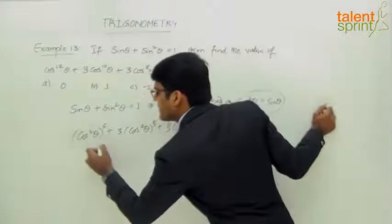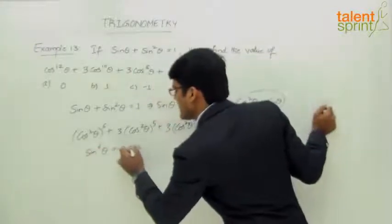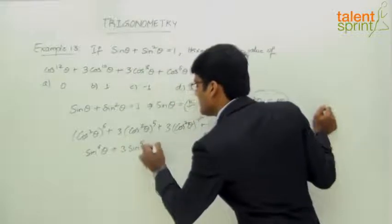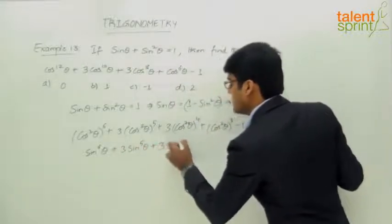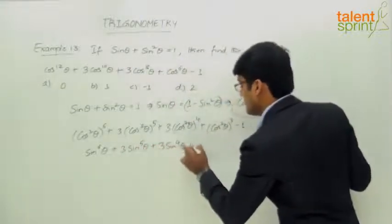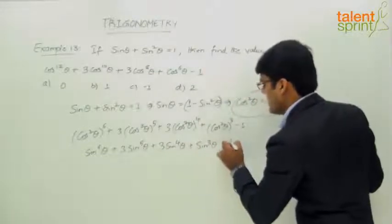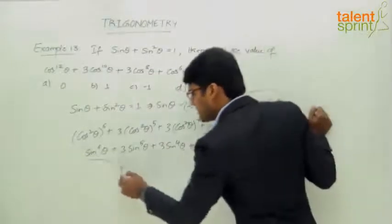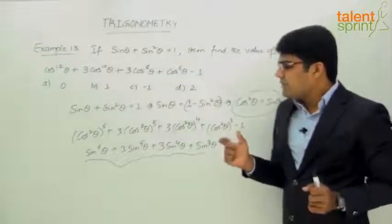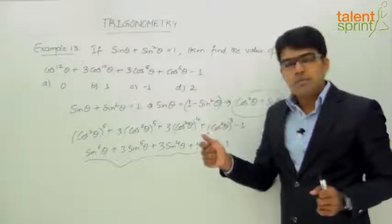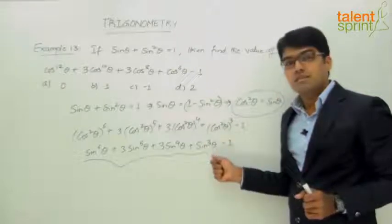Substituting cos²θ as sin θ in all these terms, we get sin⁶θ + 3sin⁵θ + 3sin⁴θ + sin³θ - 1. Now if you observe the first four terms, these are in the form of a³ + 3a²b + 3ab² + b³.